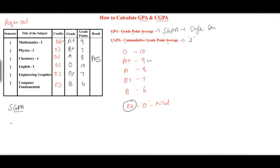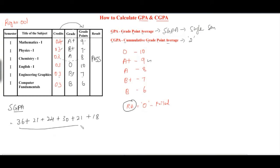It is time to calculate the SGPA for semester 1. To calculate your SGPA, all you have to do is multiply the credits by the grade points you received. So 9 times 4 is 36, and 3 times 7 is 21 — credits must be multiplied by grade points.